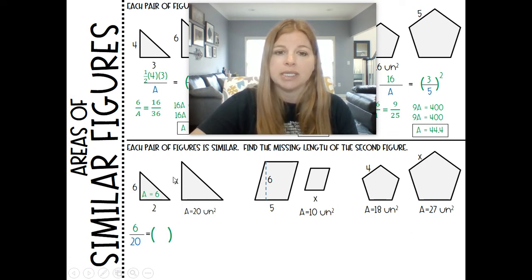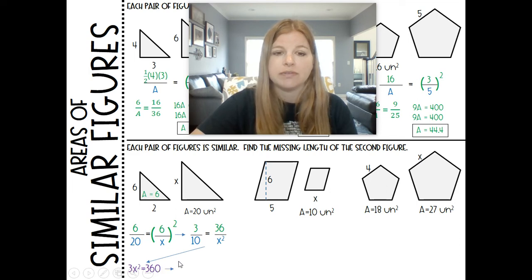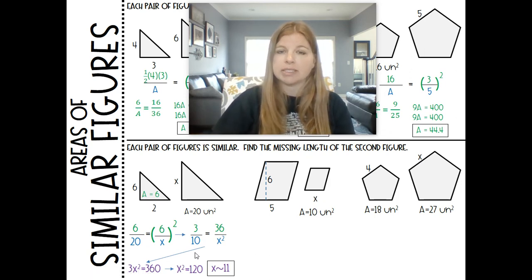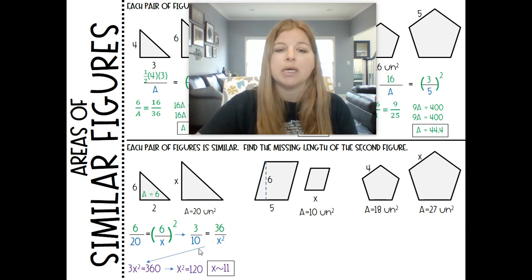So 6 over the area of 20, I'm given the area, would be equal to 6 over x squared. This then becomes 3 tenths. I'm going to simplify that fraction. Equals 36 over x squared. We're going to cross multiply. So 3 times x squared equals 36 times 10, which is 360. Divide both sides by 3. Take the square root and we get approximately 11. I say approximately 11 because I'm rounding to my tenths place. It was 10.9 and then the 9 was going to be rounding up.